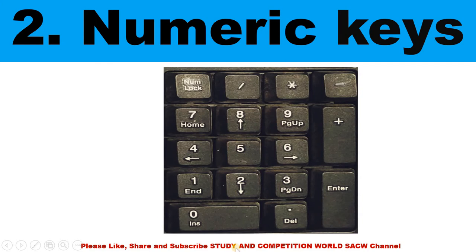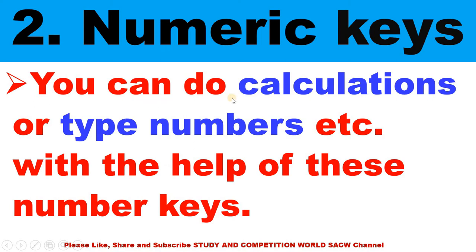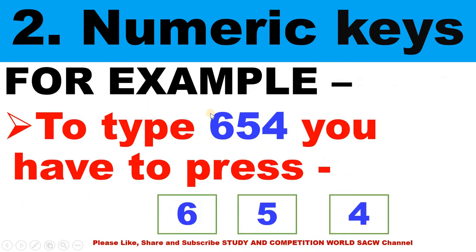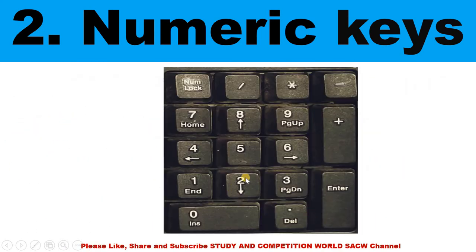These are numeric keys. You can do calculations or type numbers with the help of these number keys. For example, to type 654, you have to press 6, 5, 4. See here — you will type 6, 5, 4.